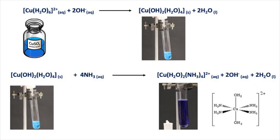The soluble deep blue complex that we form also has an octahedral shape, as drawn on this slide. Both water and ammonia are neutral ligands, so the ion has a 2+ charge because the oxidation state of copper is +2. Also notice when drawing the complex that the dative bonds are between the copper ion and the nitrogen on ammonia and the oxygen on water. Once again in this reaction the oxidation state of copper doesn't change, neither does the coordination number.